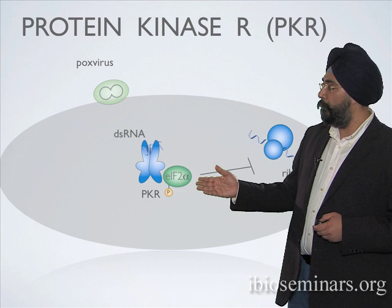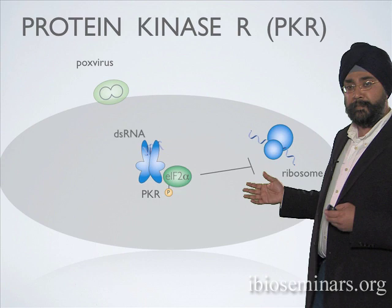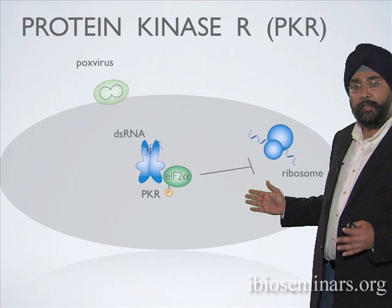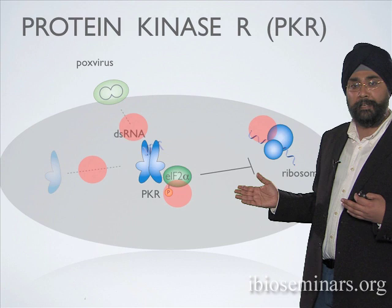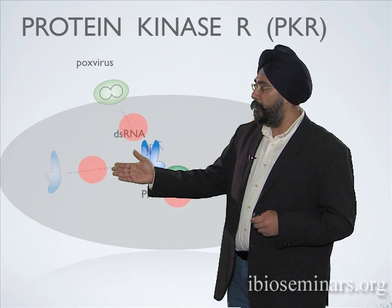PKR uses the signature of double-stranded RNA to dimerize and activate itself as a kinase, whose primary substrate is EIF2-alpha — elongation initiation factor 2-alpha — a very important control step to initiate protein production through the ribosome. When PKR phosphorylates EIF2-alpha, this essentially blocks protein production. So the cell's response to detecting viral attack is to stop all protein production so it does not become a virus production factory — a very effective and potent block to viral production.